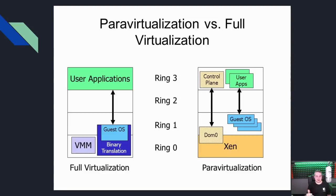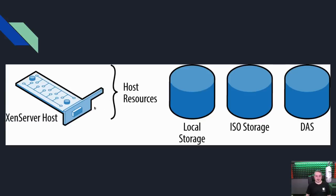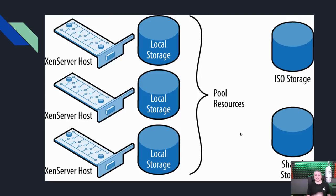A single Xen server host can run completely autonomously with local storage, ISO storage, and direct-attach storage — no other resources required. You can use a RAID array, either software RAID (supported in XCP-ng) or hardware RAID, or direct-attach storage like iSCSI or NFS. When you want to pool resources, you need two or more hosts. Even a single host is considered a pool — you just have one host in it. The system is always termed a pool regardless of size.